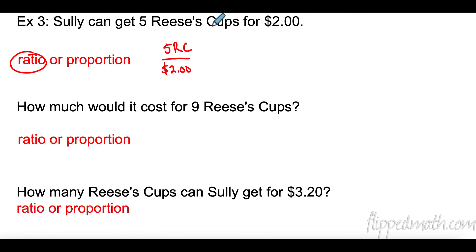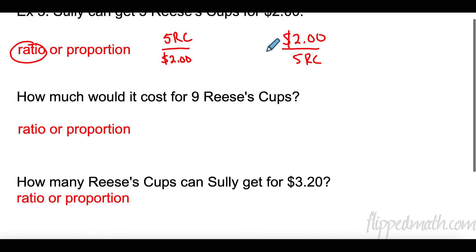You try this one. So, if we set this one up as a ratio, we have five Reese's cups for every $2. Could you have set it up like this? $2 for five Reese's cups? You certainly could. And I'll show you down here that it doesn't really matter. You just need to make sure that the labels match when you set up your proportions.